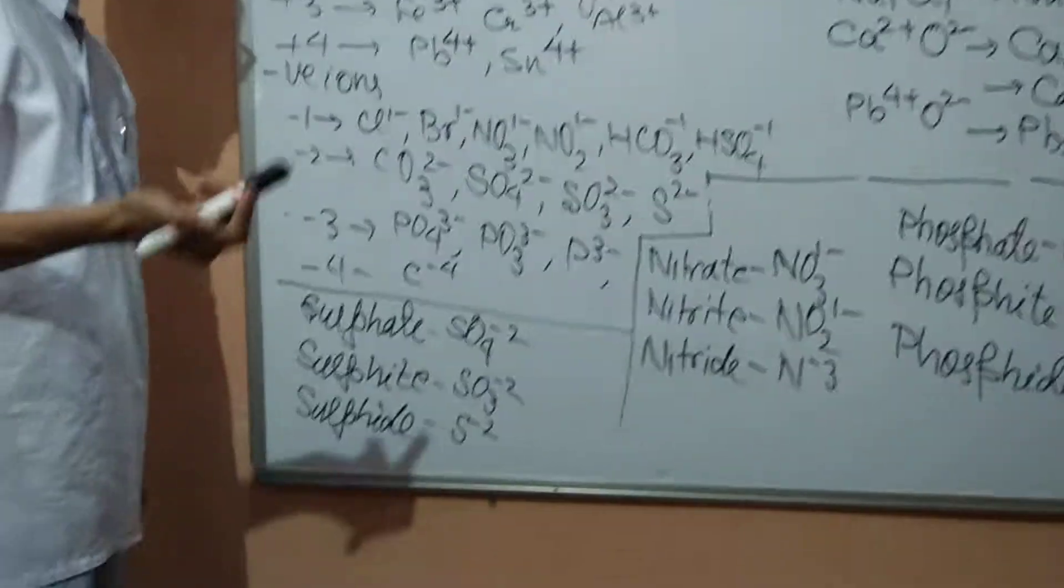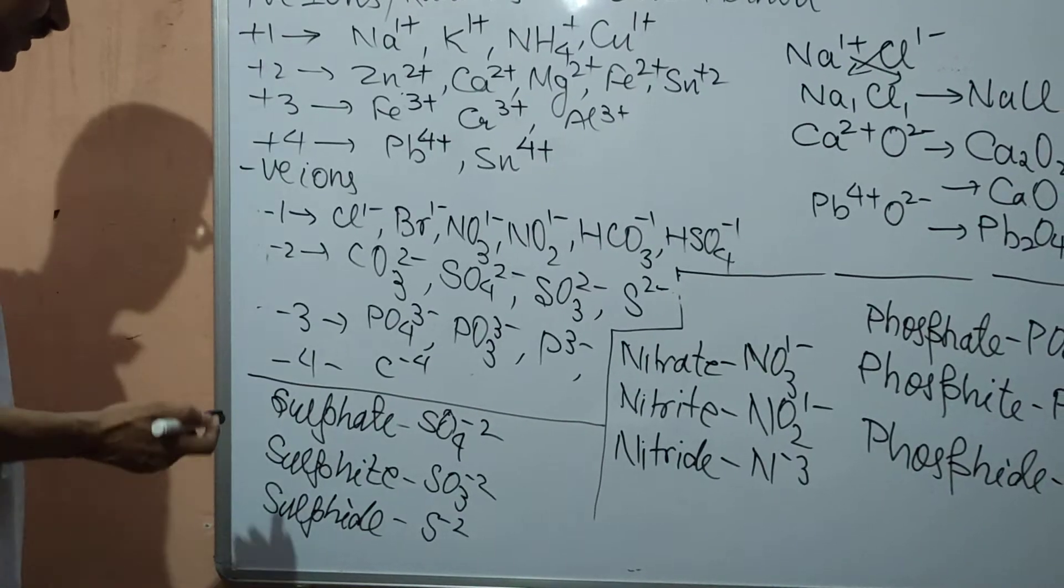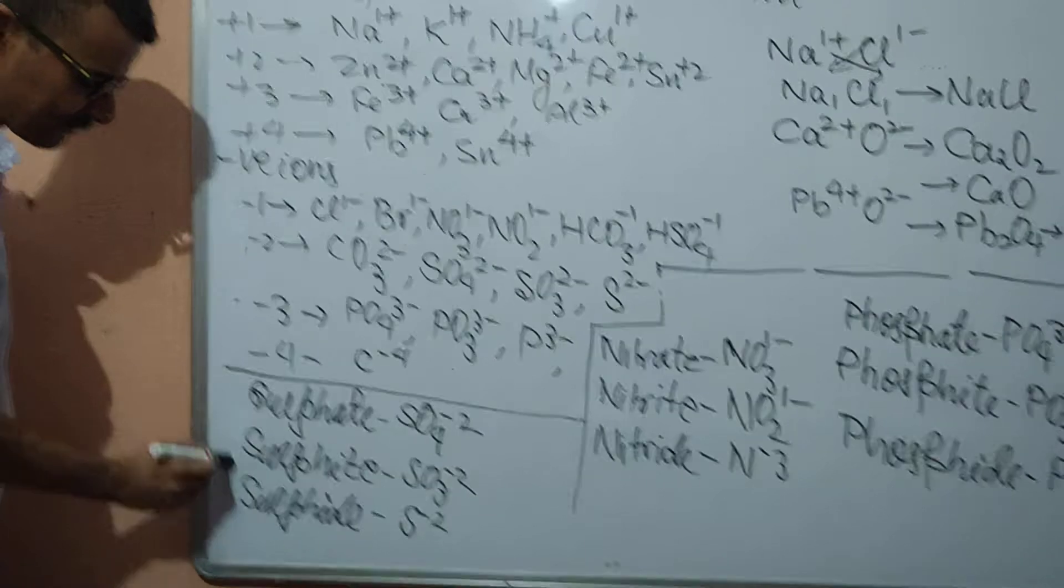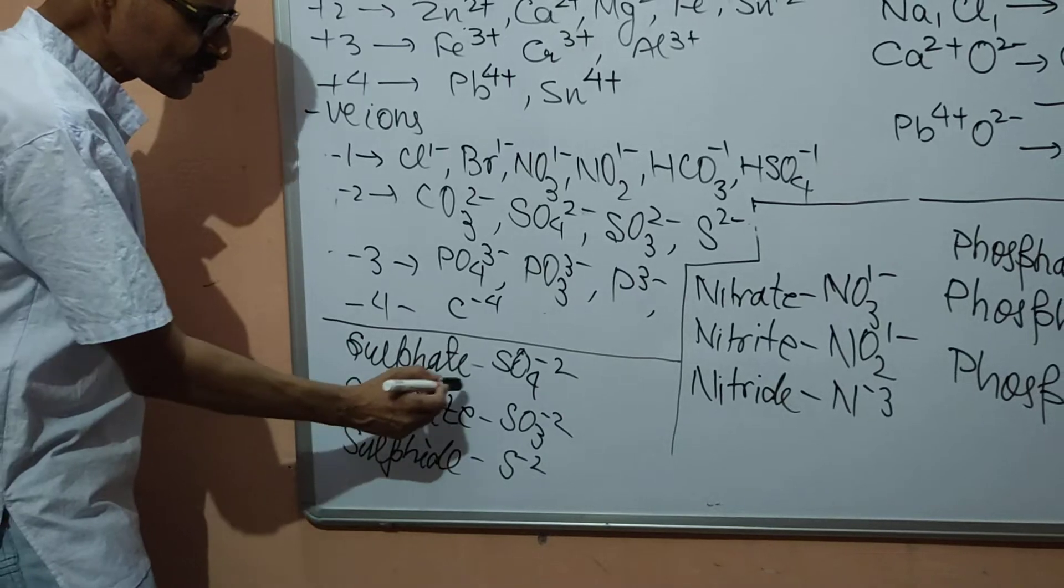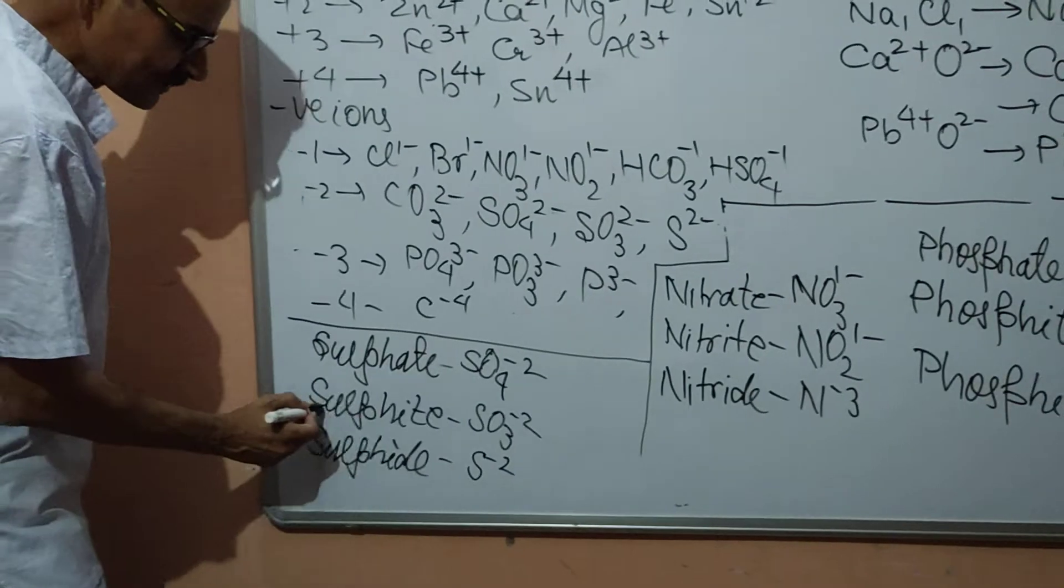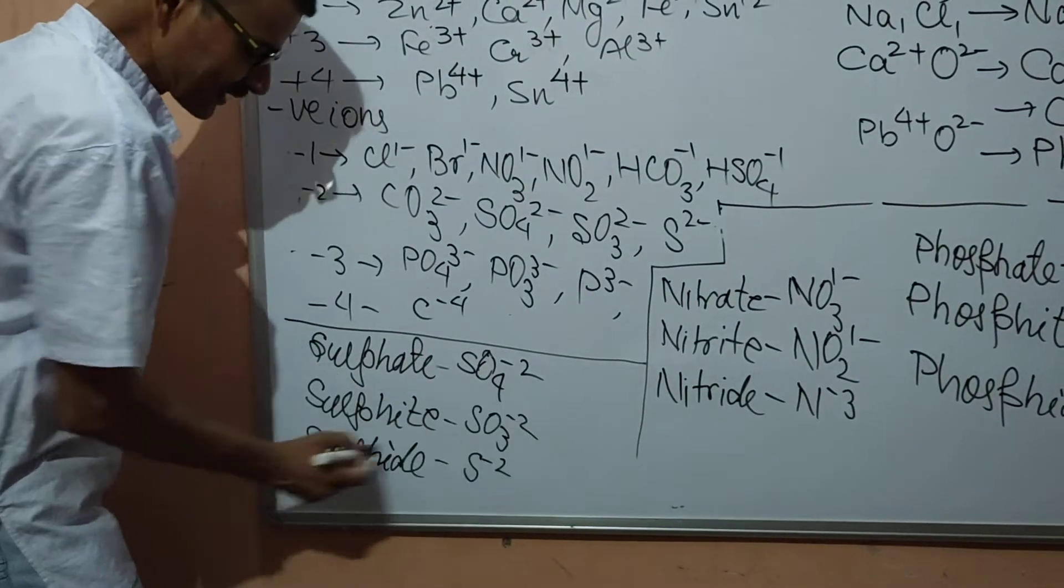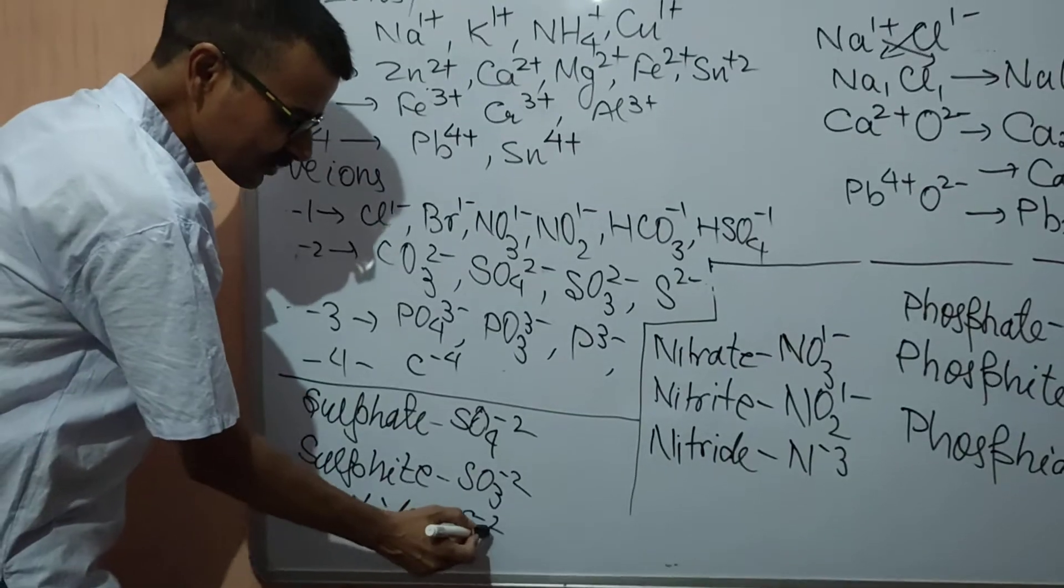However, there are some formulae, some radicals where we always get confused. So let's clear our confusion today itself and let's not do these mistakes at all. First confusion happens in the symbols, sulphate, sulphite and sulphide. Sulphate, SO4 2-. Sulphite, SO3 2-. Sulphide, S 2-.